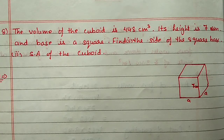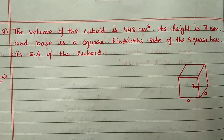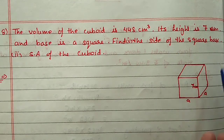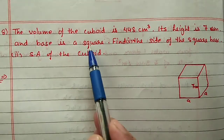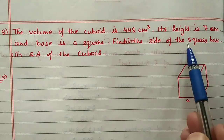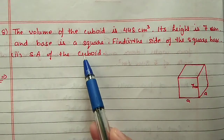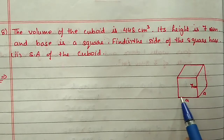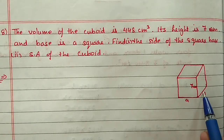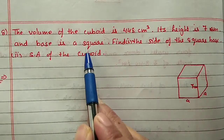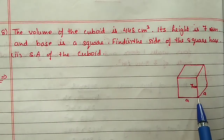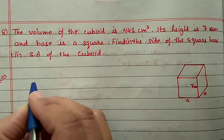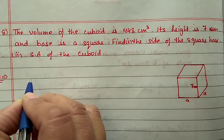Next, question number 8. The volume of a cuboid is 448 cm³, its height is 7 cm, and the base is a square. Find the side of the square and the surface area of the cuboid. The base has side a, so length is a, breadth is also a. Height is given as 7. We will start from the volume.